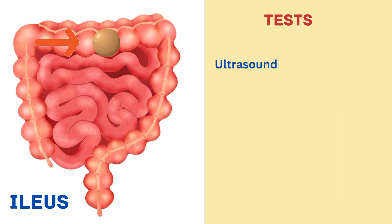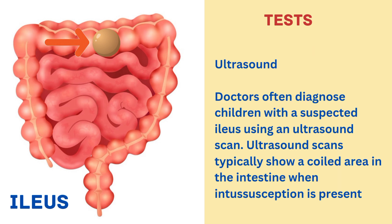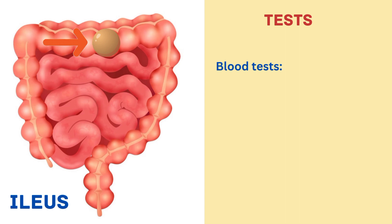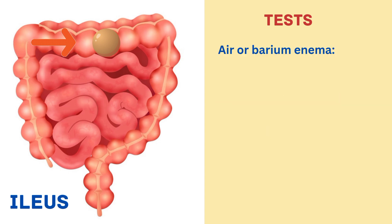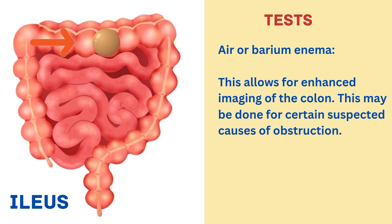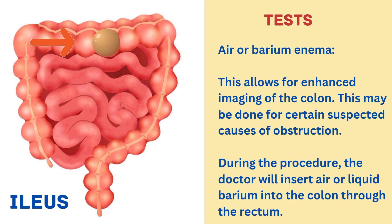The next test is ultrasound. Doctors often diagnose children with a suspected ileus using an ultrasound scan, which typically shows a coiled area in the intestine when intussusception is present. The next test is a blood test to check your electrolyte and mineral levels. The next test is air or barium enema, which allows for enhanced imaging of the colon. During the procedure, the doctor will insert air or liquid barium into the colon through the rectum.